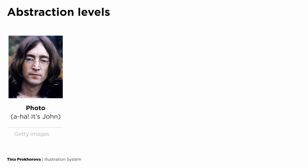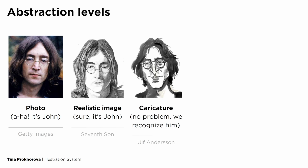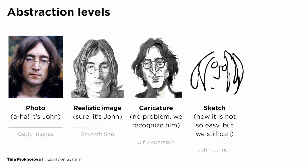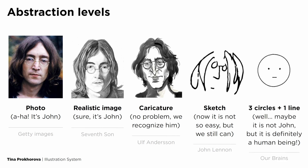A photo conveys realism quite well and we can use it when it's necessary to project the image of a certain person. Further, we have realistic images. We often use them in cartoons, comics, some videos, etc. As the image becomes simpler, so does its function. It's important that in the most primitive lines we can still recognize the original source. And moreover, in three circles and just one line, we can recognize a person.